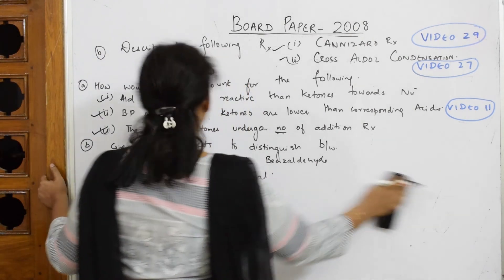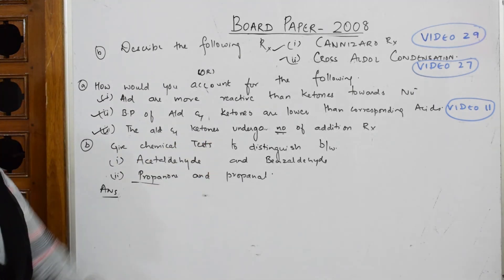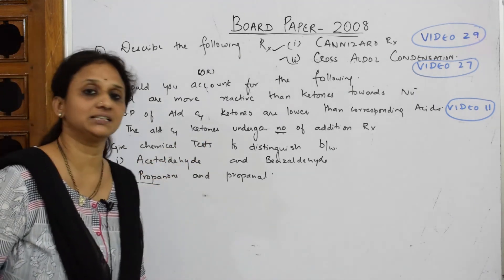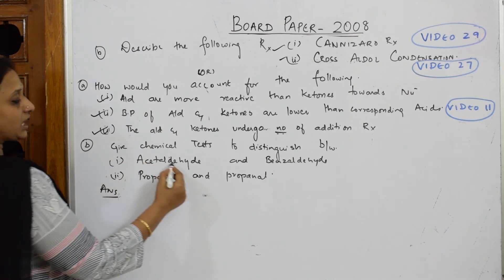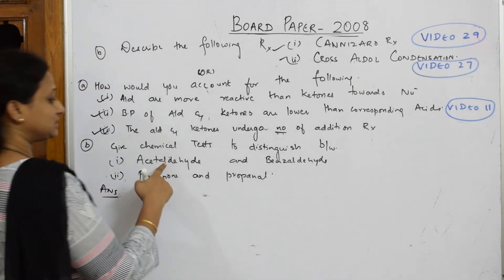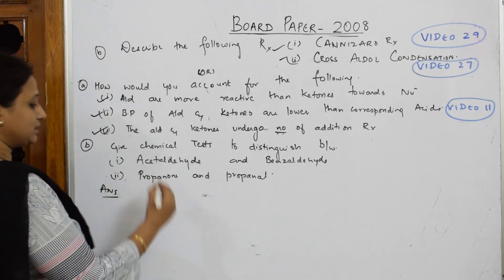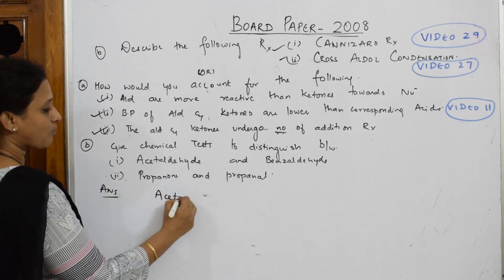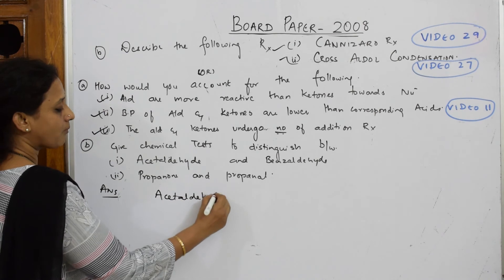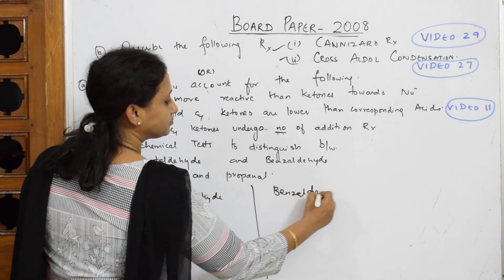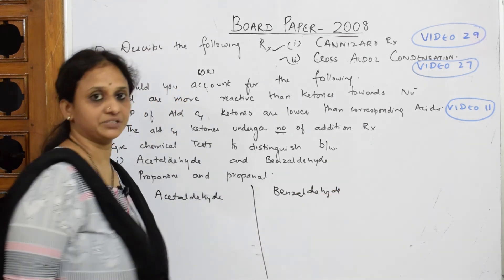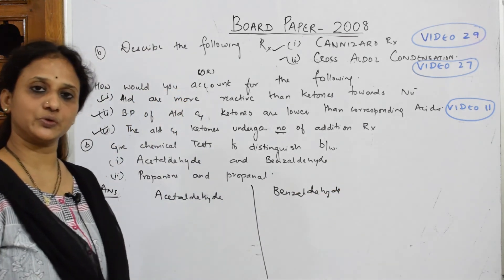Now let's write the next one, part B. They've given us again the chemical test to distinguish between aldehydes and benzaldehyde: propanone and propanal. Simple - aldehyde and benzaldehyde. Let us write aldehyde and benzaldehyde.